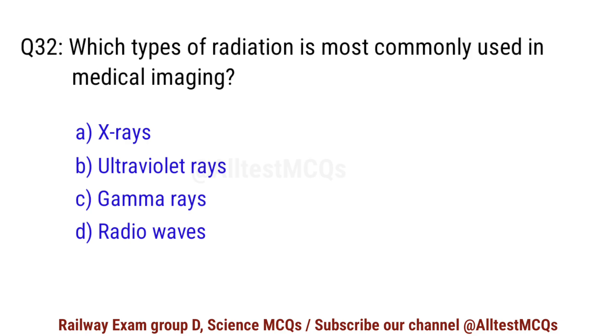Question No. 32. Which type of radiation is most commonly used in medical imaging? Correct option is A. X-rays.